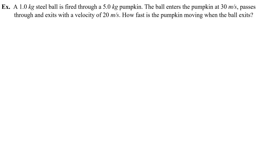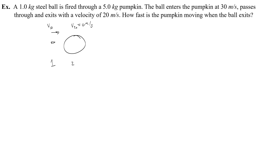Let's try another one. A 1 kilogram steel ball is fired through a 5 kilogram pumpkin. We'll do a before and after. The steel ball is going into the pumpkin — we'll call the steel ball thing 1 and the pumpkin thing 2. The pumpkin is at rest, so v₂₀ equals 0, and the steel ball has an initial velocity v₁₀ of 30 meters per second. Then it passes through and exits with a velocity of 20 meters per second, and the pumpkin will have some velocity v₂ to the right.